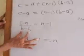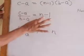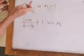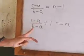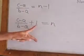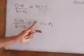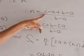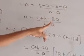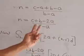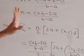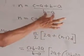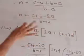Dividing both sides: C minus A upon B minus A equals N minus 1. We need to find N, so adding 1 to both sides: C minus A upon B minus A plus 1 equals N. By cross multiplication, N equals C minus A plus B minus A upon B minus A, which simplifies to N equals B plus C minus 2A upon B minus A.